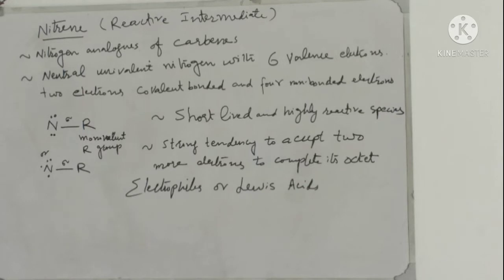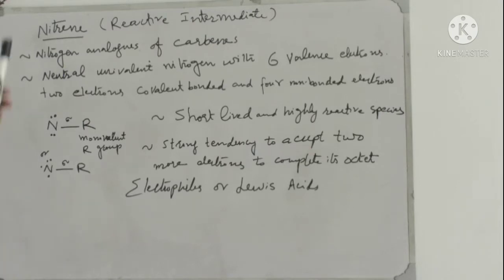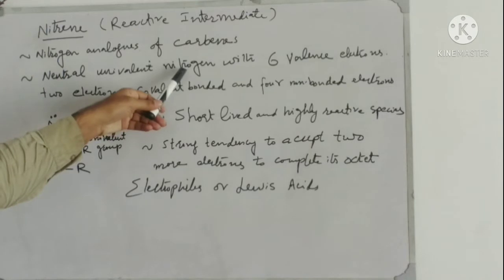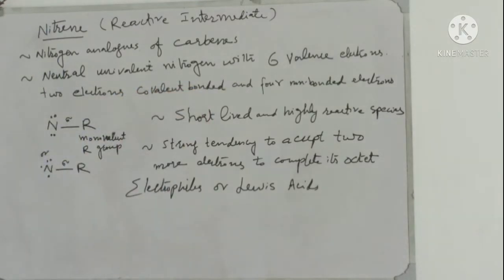Nitrenes are nitrogen analogues of carbenes. These nitrenes are neutral univalent nitrogen atom with six valence electrons. So nitrenes are neutral univalent nitrogen-containing species with six valence electrons.